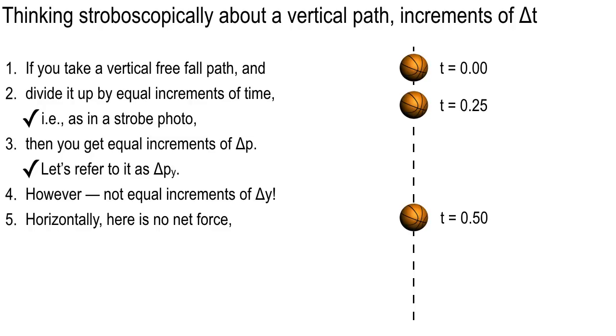If you take a vertical free fall and you divide it up into equal increments of time, one of the interesting things is you get equal increments of delta P. You get equal increments of impulse. For every quarter of a second, you get another 1.52 kilogram meters per second of impulse. We just figured that out. And I want to refer to that impulse, that delta P, with a subscript. For the vertical axis, so let's call that delta P subscript Y.